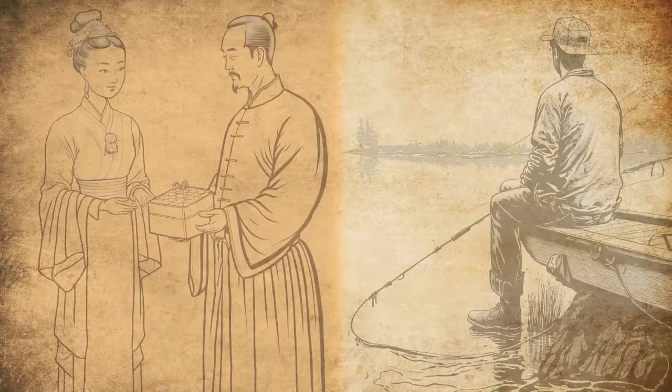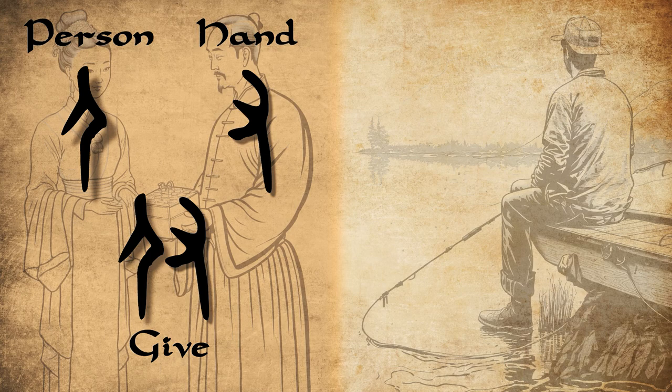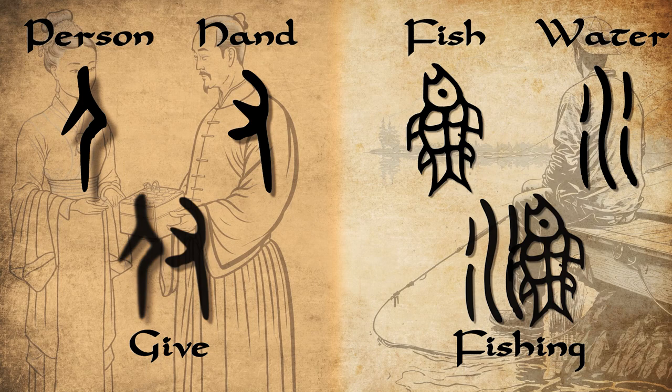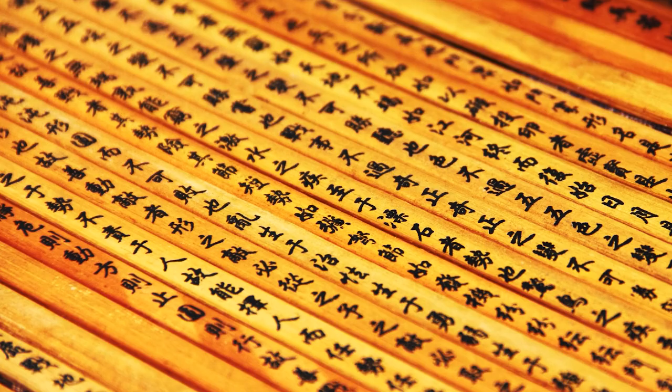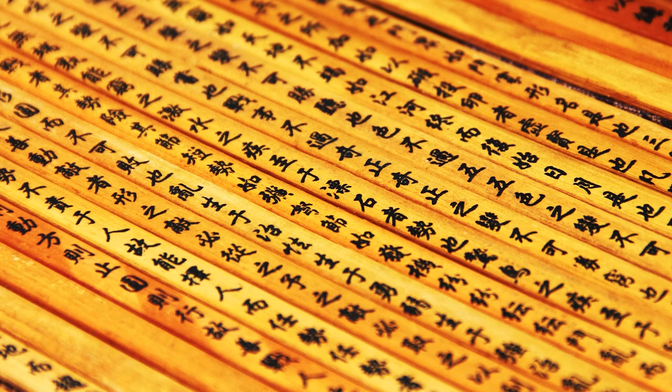For instance, if we put the character for person with a hand, we have the character for give. If we put fish with water, we get the character for fishing. But let's remember the Egyptians — it's not possible to represent everything that exists this way. Eventually, we are going to need to represent things using only sounds. The Chinese also realized that by using sounds instead of only bringing meanings together, the script could become even simpler.